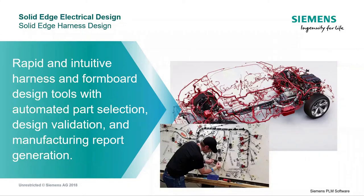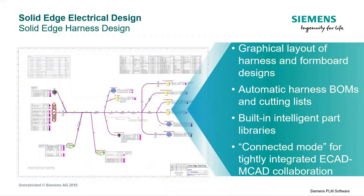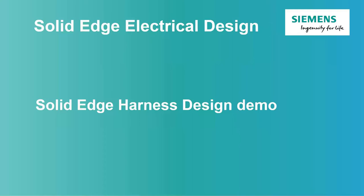Let's talk about Solid Edge Electrical harness design. Harnesses are normally designed on a form board where connectors are placed at different ends going along different routes and branches. Using Solid Edge Electrical, this is very much automated — it validates the design and makes reporting and generation much better and easier. We can see a layout of the connectors, a bill of materials, a graphical layout, and the intelligent part libraries mean you can actually see the lengths of the wiring harness and whether it will stretch correctly around the mechanical machine.